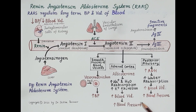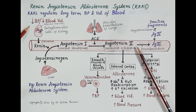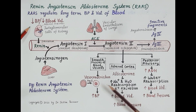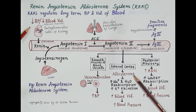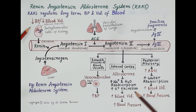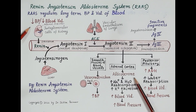RAS is activated and Angiotensin 2 is produced whenever blood pressure or blood volume falls below normal. Angiotensin 2 causes vasoconstriction and mediates the release of aldosterone, thereby increasing both blood pressure and blood volume. This is why the system is called the Renin-Angiotensin-Aldosterone System — it regulates blood pressure and blood volume.